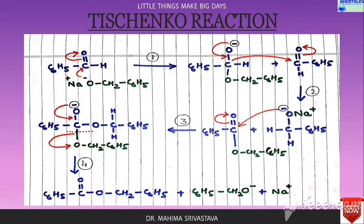I have taken benzaldehyde. The carbon which is electron deficient gets attracted towards the oxygen of sodium alkoxide in step 1, and pi cleavage takes place, resulting in the negative charge on the oxygen of the aldehyde group. The step 1 product is the attachment of oxygen of sodium alkoxide to carbon through a sigma bond, a pi cleavage takes place, and sodium ion is released in the solution.